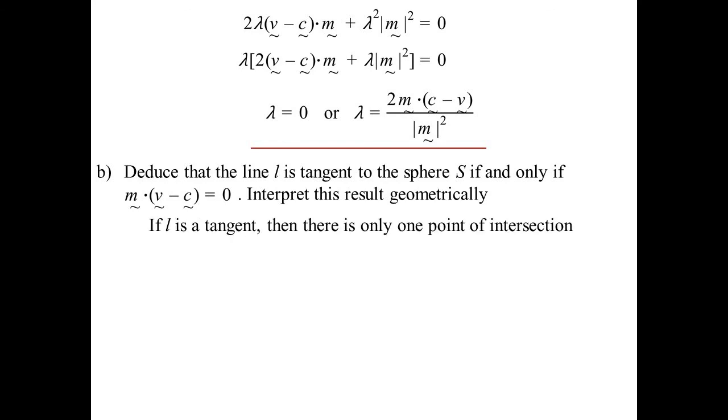Well, if L is a tangent, then there is only one point of intersection. In other words, my vector W and my vector V must be the same thing. Therefore, V plus lambda M must equal V, lambda equals zero. So now I go back to my answer before and say, well, okay, let's make lambda equal zero. Well, the first one's trivial, because lambda is always equal to zero. So that's fine. But now let's have a look at the right hand side there. 2M dot C minus V. Now that must be true. M dot V minus C equals zero. Because the top of the fraction must equal zero. I don't have to worry about the two. So it must be the M dot V minus C that's equal to zero.